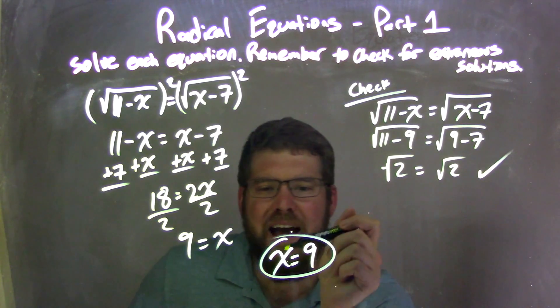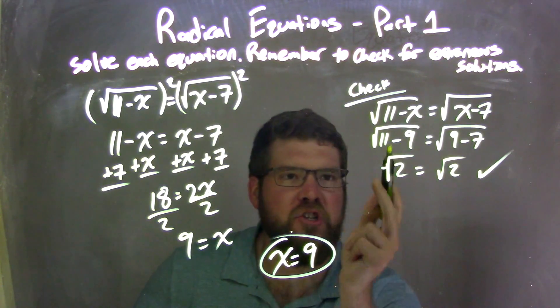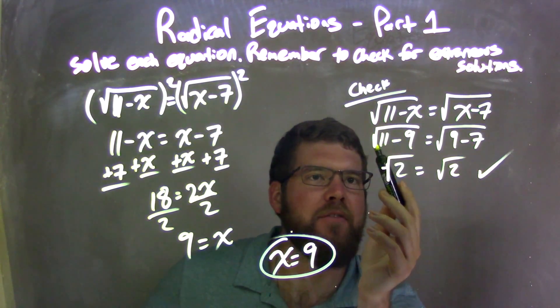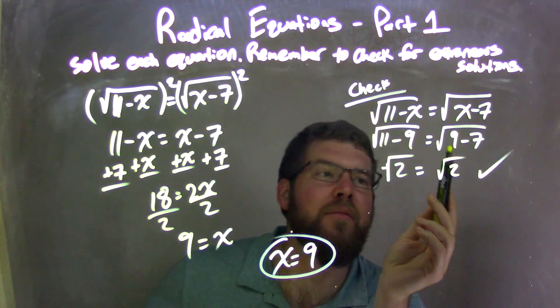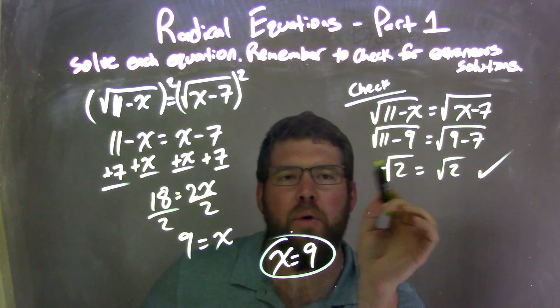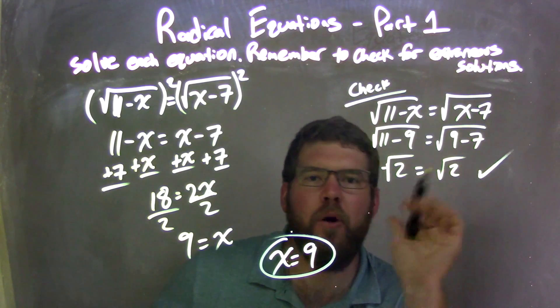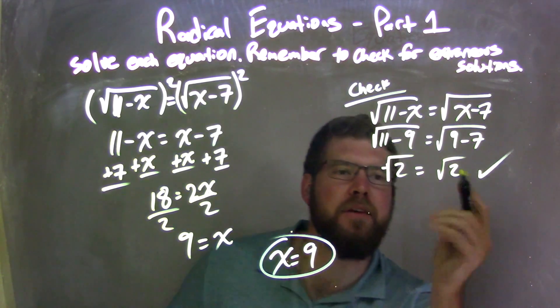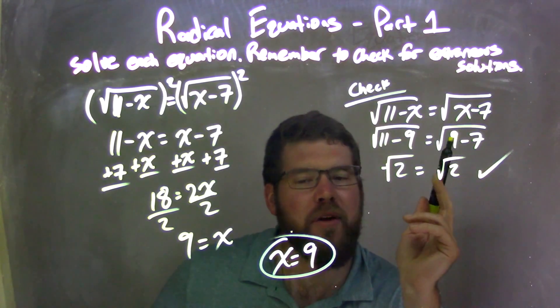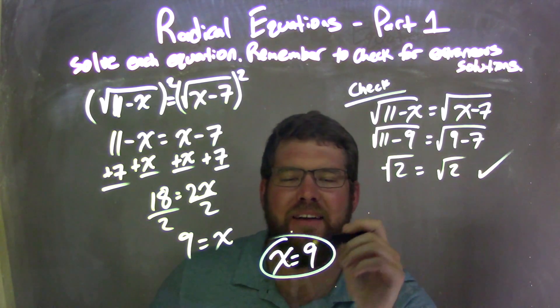Rewrote that nice and neat. x equals 9. Pretty confident at this point, but I need to check. Rewrote my equations and then plug 9 in for x. By doing so, I have the square root of 11 minus 9 equals the square root of 9 minus 7. Simplify. 11 minus 9 is 2, 9 minus 7 is 2. Both stay inside the square root. Both are equal. Check. We are good. Not check off the Star Trek guy, but check off that it's good. So we have no extraneous solutions and our final answer here is confirmed as x equals 9.